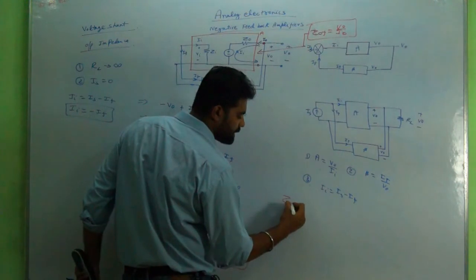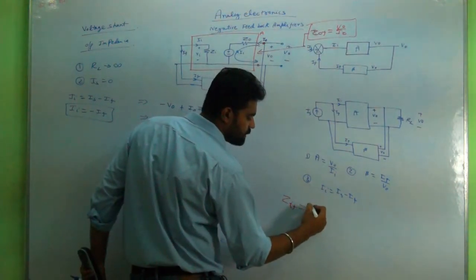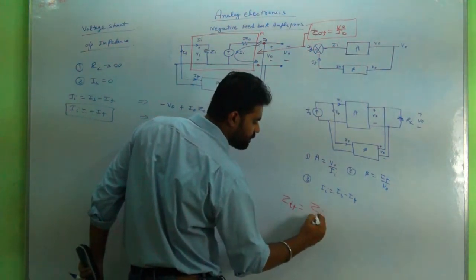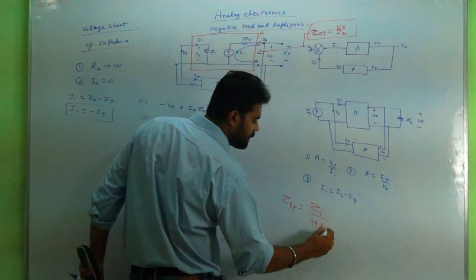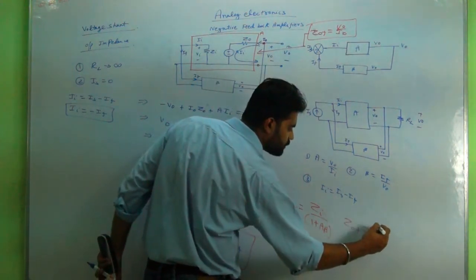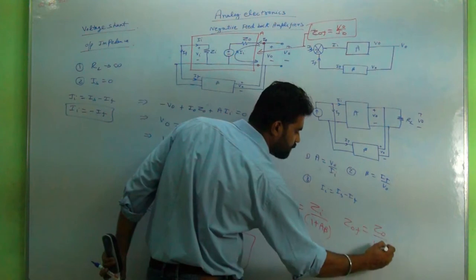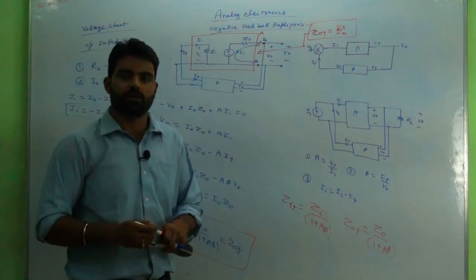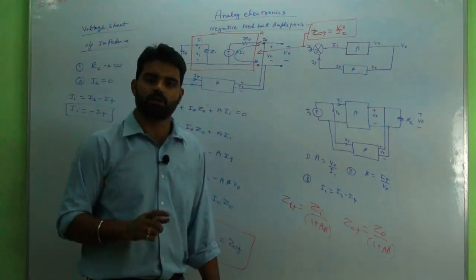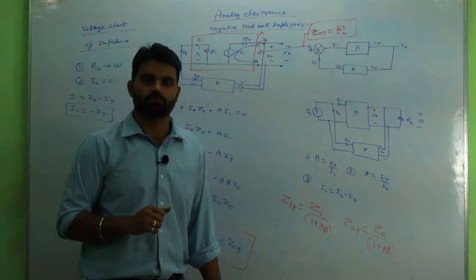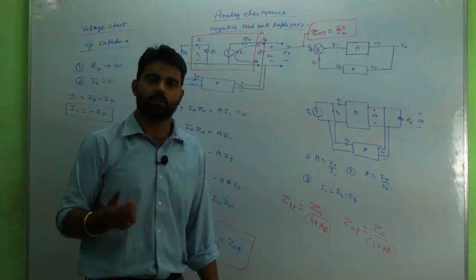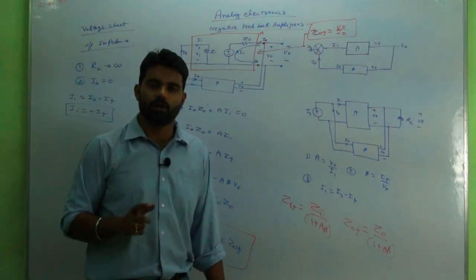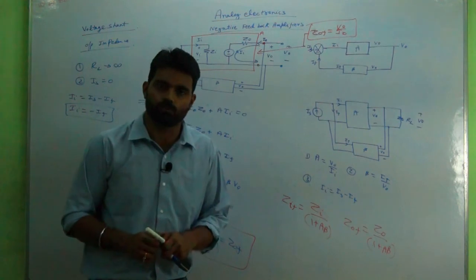We conclude that ZOF = Z_naught / (1 + Aβ). So both the input and the output impedances are decreasing — each divided by a factor (1 + Aβ) which is greater than 1 for voltage shunt feedback. We will deal with current series feedback in the next episode. Till then, goodbye, and please consider subscribing — this will help the channel grow. Thank you.